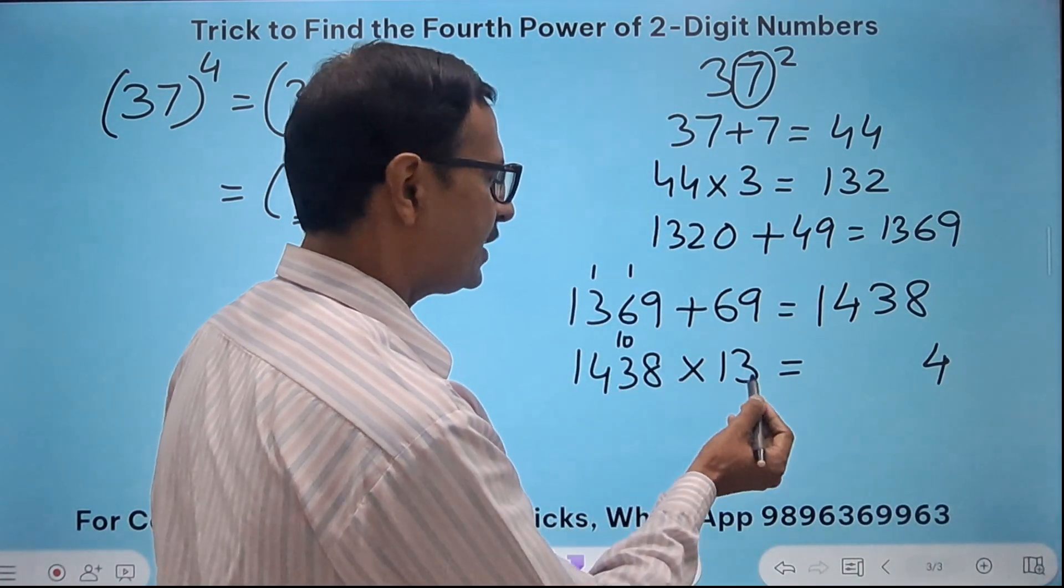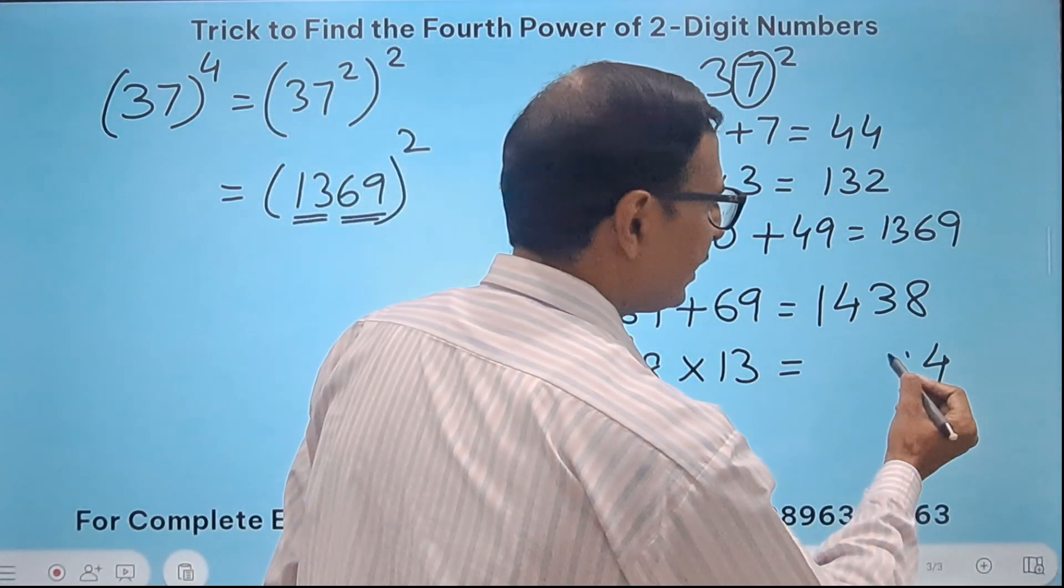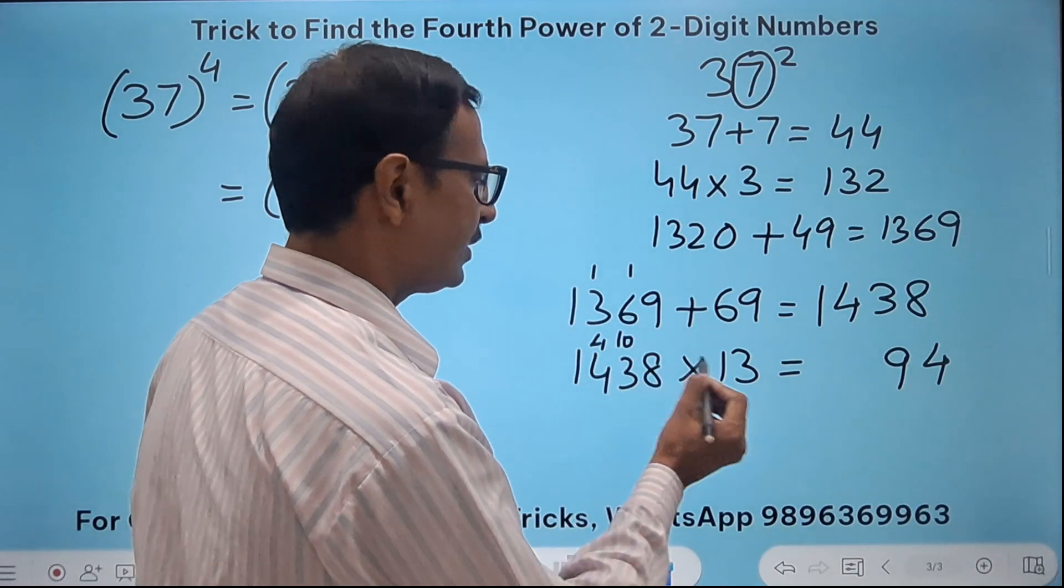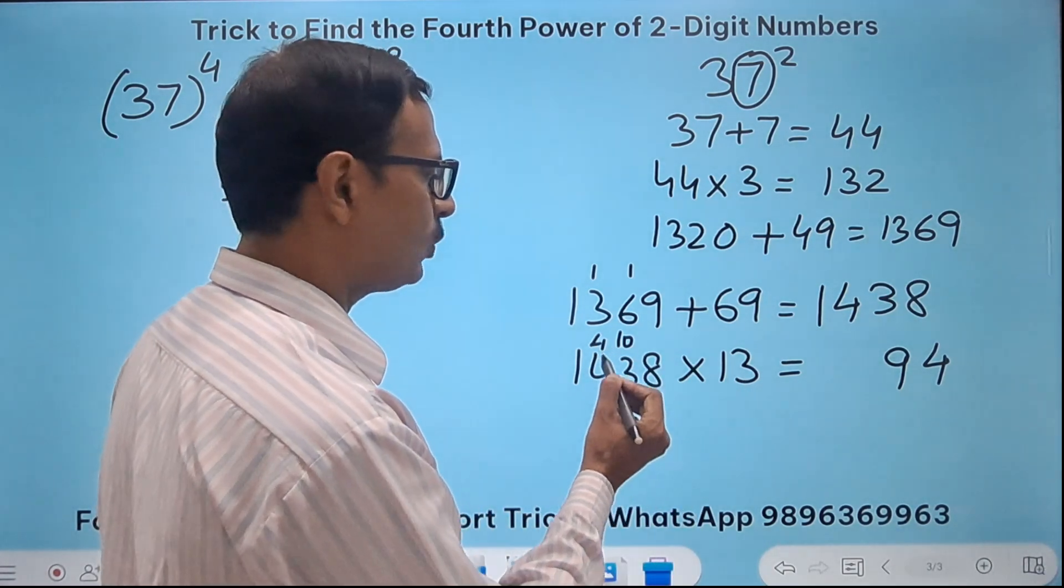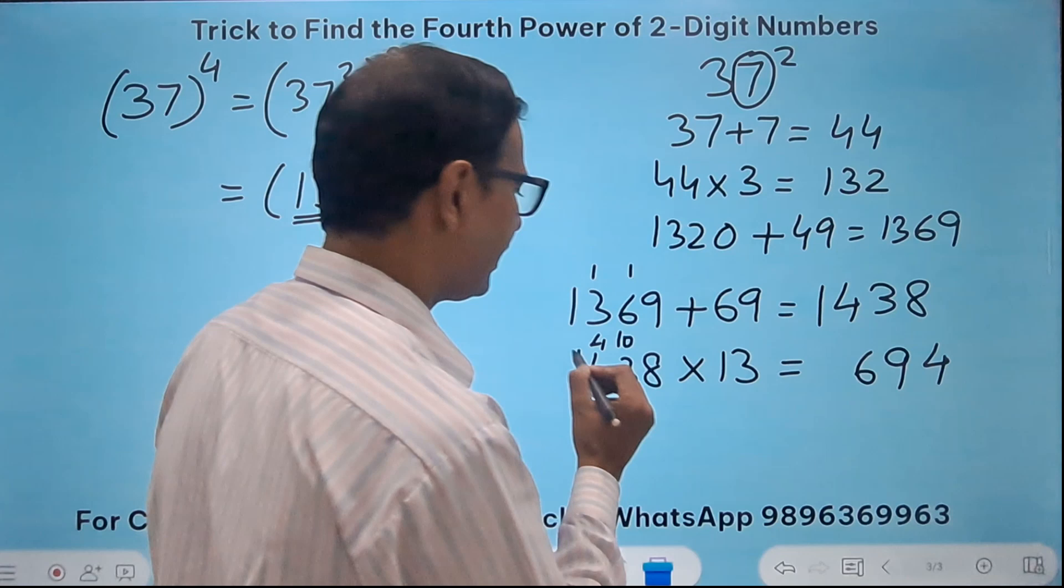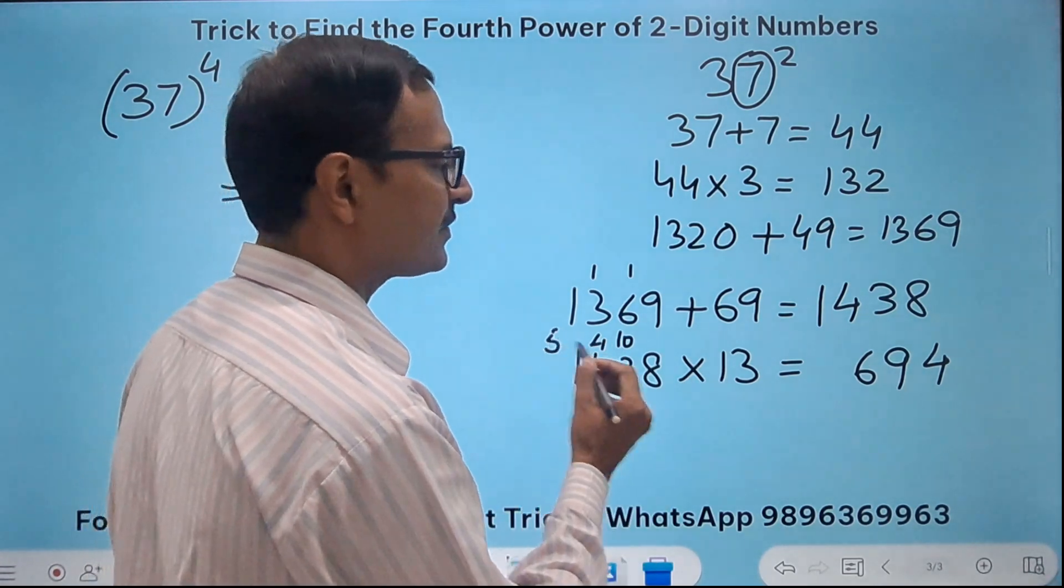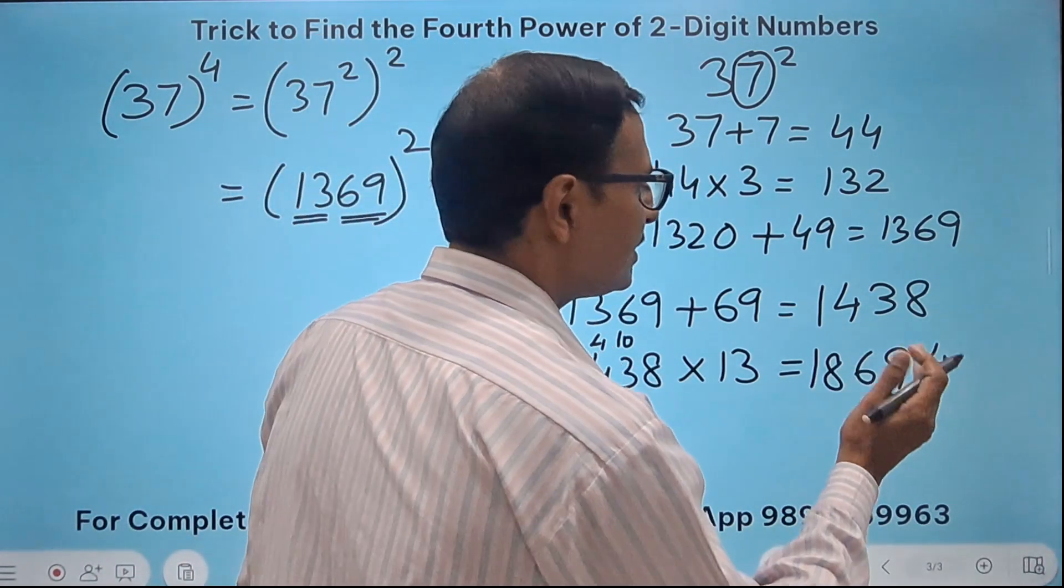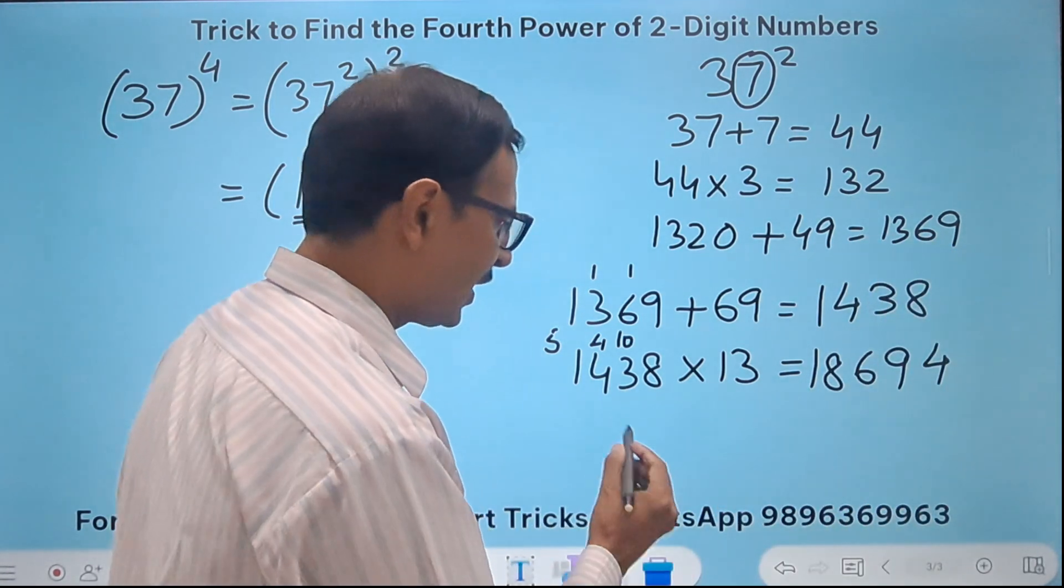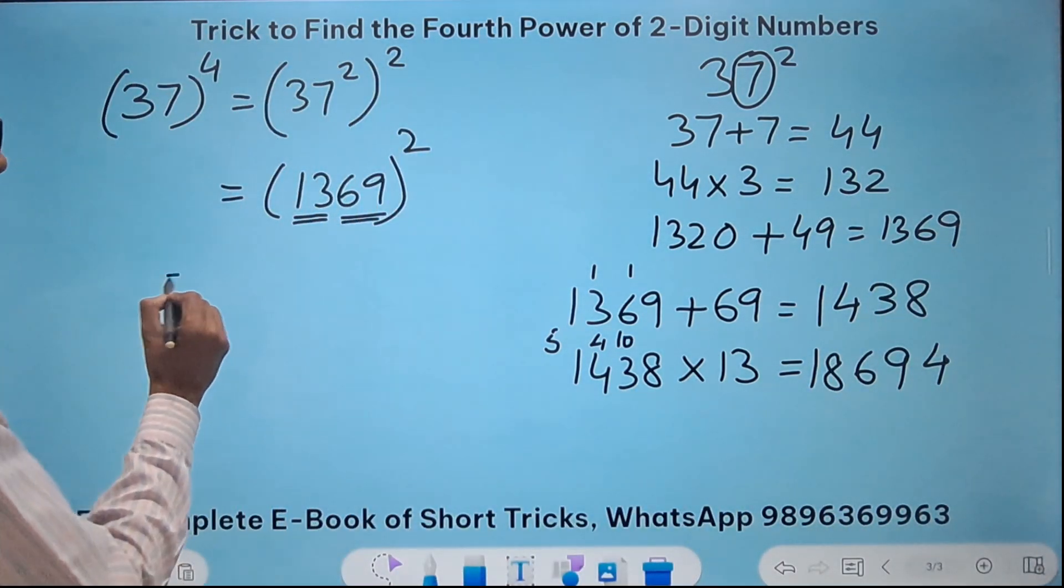So 13 times 8 is 104. So 4 and a 10 carry. 13 times 3 is 39, plus 10 is 49. 9, 4 carry. 13 times 4 is 52 plus 4 is 56. 6, 5 carry. And then 13 plus 5 is 18. 18694.